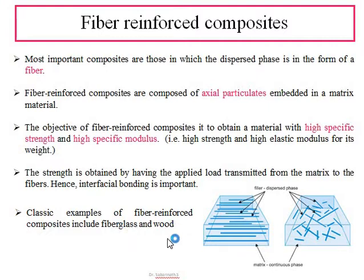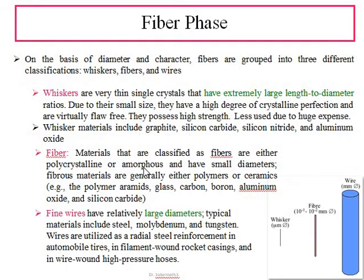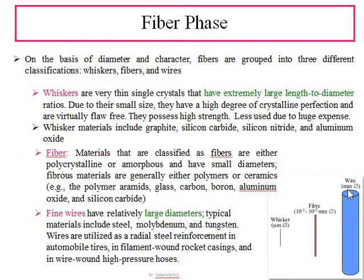The fiber phase is basically divided into three types: whiskers, fibers, and fine wires. The diameter of whiskers is based on the micrometer range, whereas fibers are in the range of micrometers to millimeters. Wires lie in the above-diameter range. More specifically, we use the length-to-diameter ratio to distinguish them. The length-to-diameter ratio for whiskers is very small.